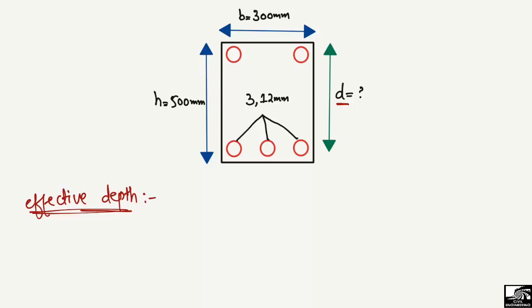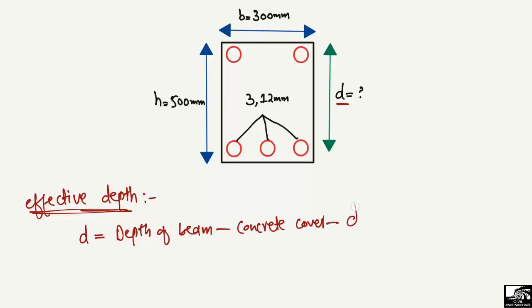This can also be found for any slab cross-section. To find out the effective depth, it is mostly represented by D. The formula is: effective depth D = depth of beam − concrete cover − half of the diameter of bar used in the beam. This is the simple formula used to find out the effective depth.